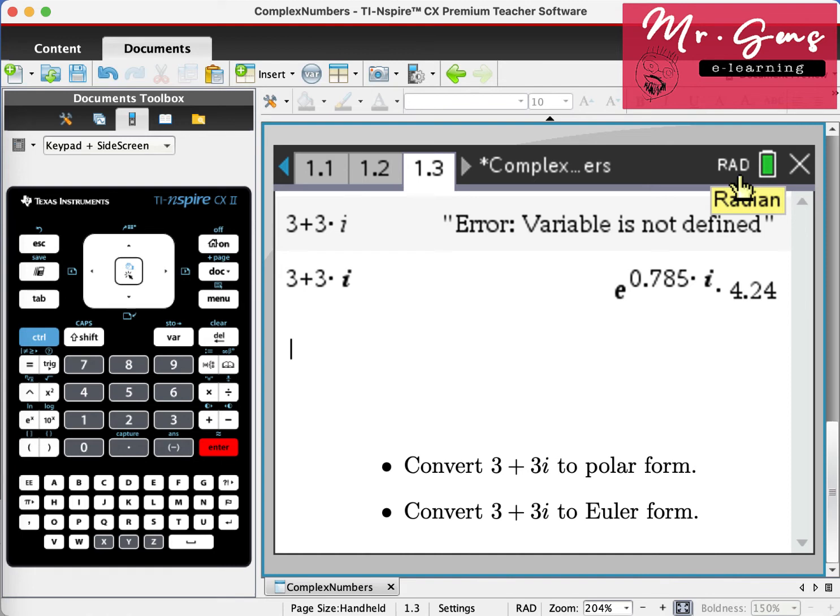Our setting was polar last time, and angle setting is radian. Here we have the Euler form in radian. If I change the angle settings to degree, this time our answer will be in polar form, but the argument will be in degree.